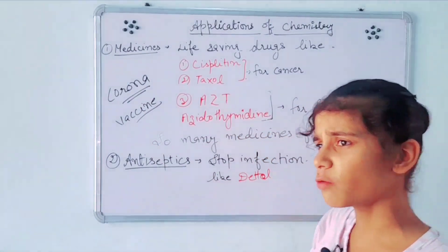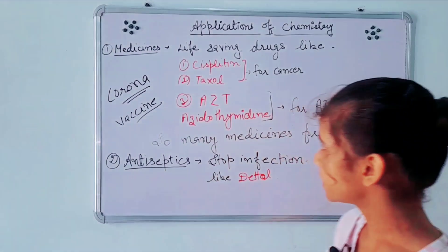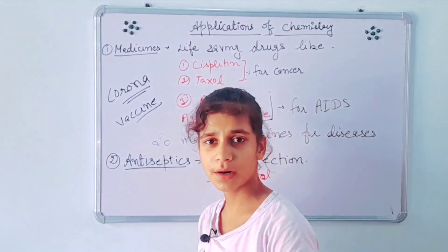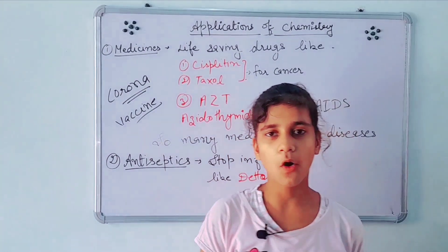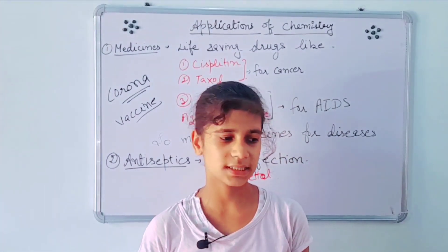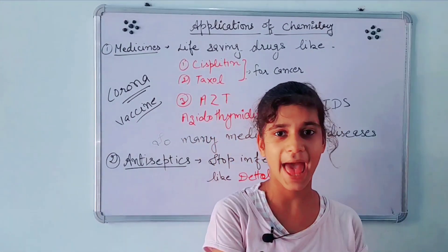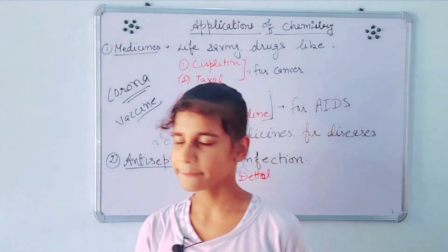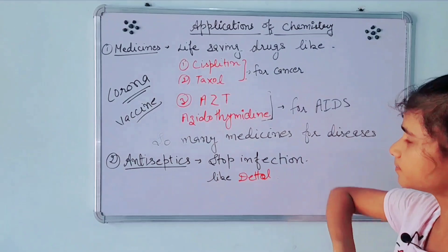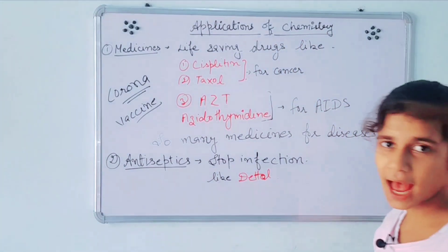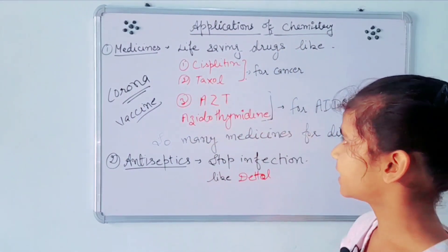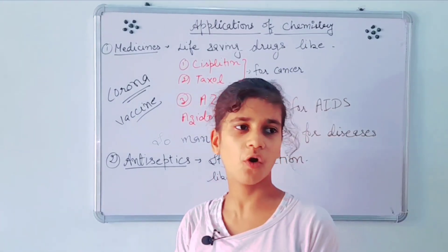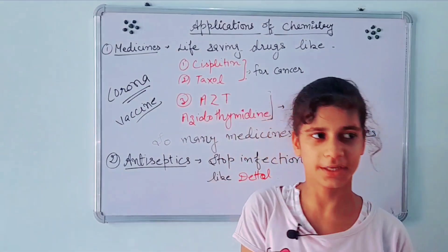Firstly, medicines are life-saving drugs. If a person is affected by a disease, medicines help that person to recover. Some examples of medicines are cisplatin and taxol — both of these are used for cancer patients.